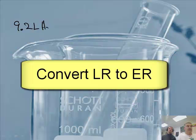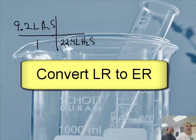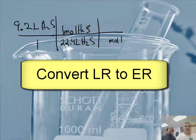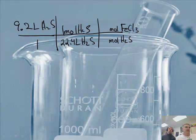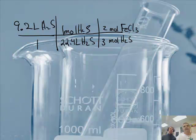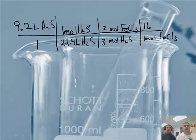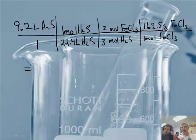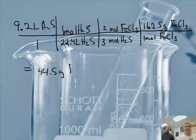9.2 liters of H₂S over 1, times 1 mole of H₂S over 22.4 liters. Then moles of H₂S to moles of FeCl₃ — the ratio was 2 Fe's and 3 H₂S's. And the molar mass of FeCl₃ is 162.5, so 1 mole of FeCl₃ is 162.5 grams. And we get 44.5 grams of FeCl₃ used.